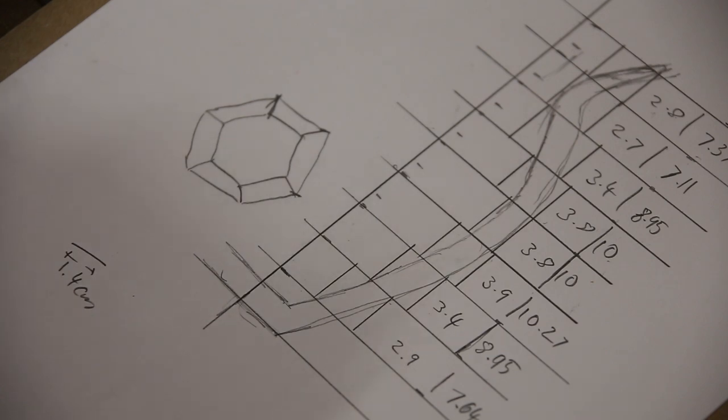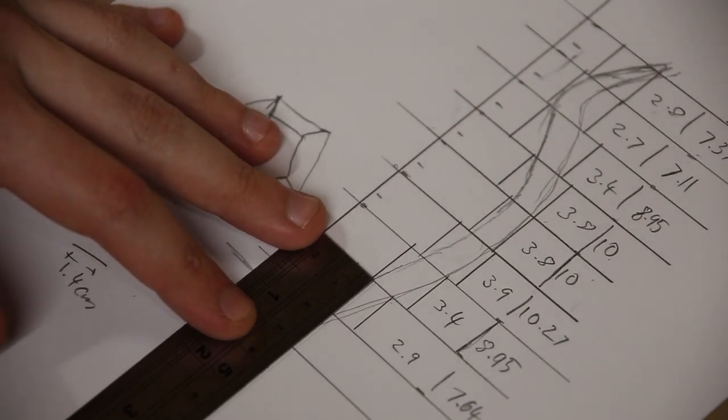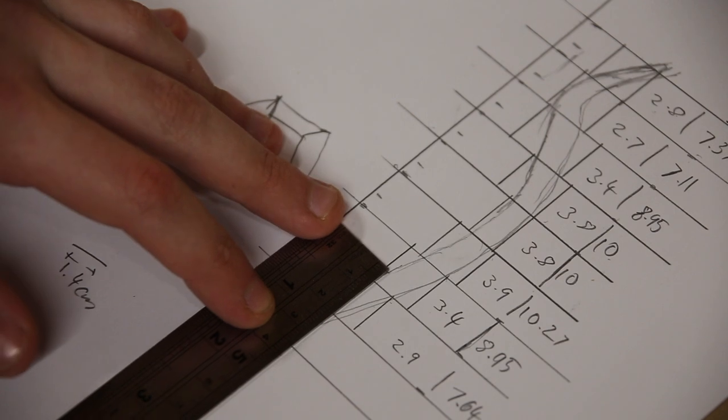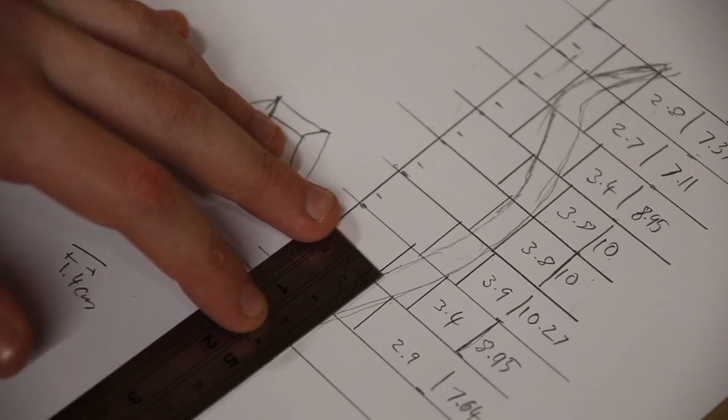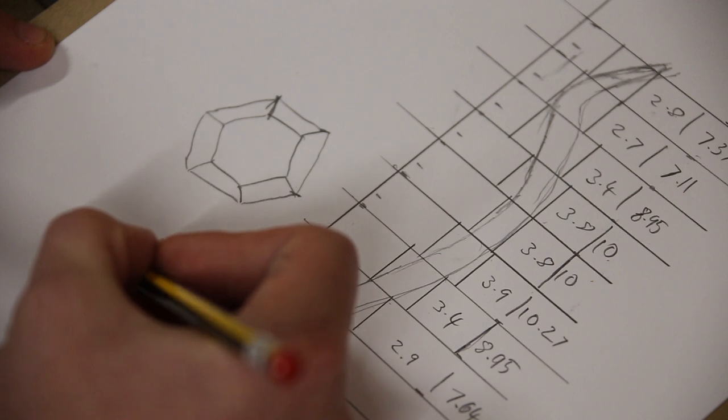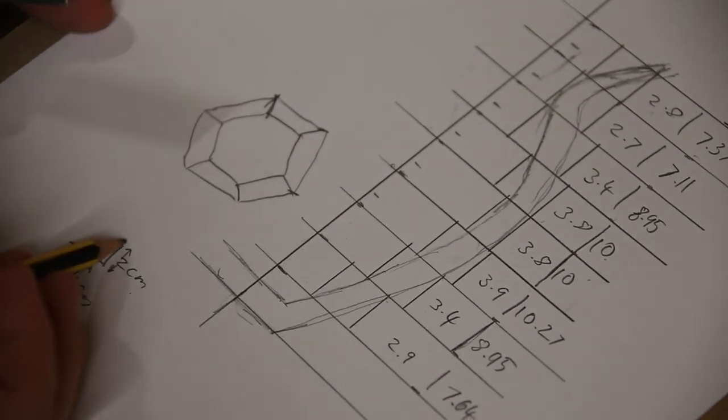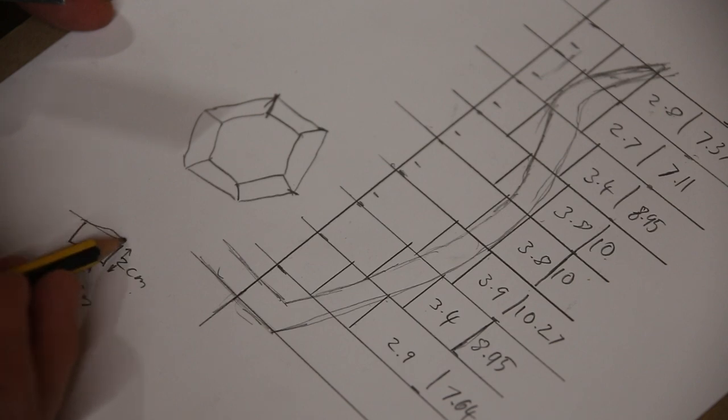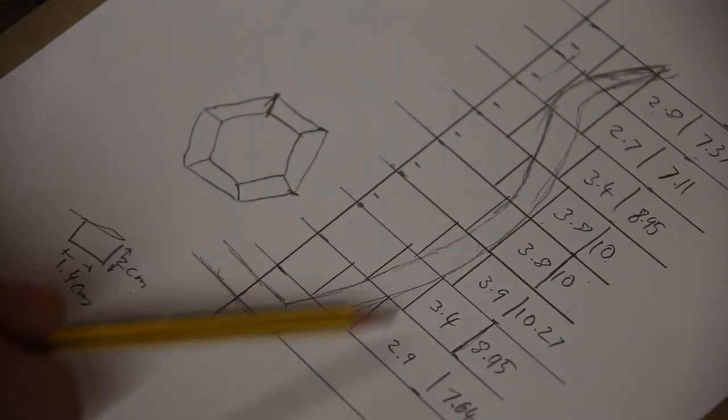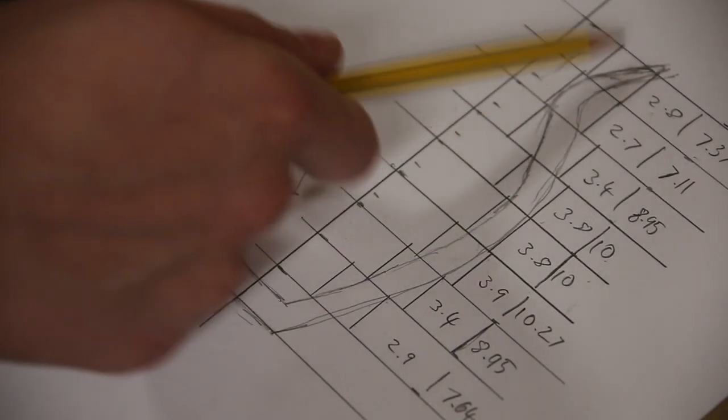The thickness of each ring is 1.5 centimeters, but these rings are going to need to be sanded down. Just so I've got enough to work with, I'm going to do mine a little extra, so I'm going to do mine 2 centimeters tall. The measurement of the piece of wood I need for the first segmented ring to cut the segments from is 1.4 centimeters by 2 centimeters. I can then repeat this process with all of the other rings.